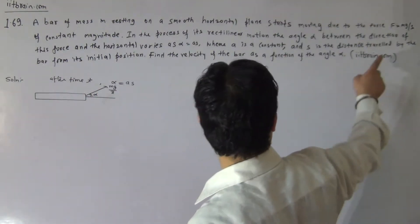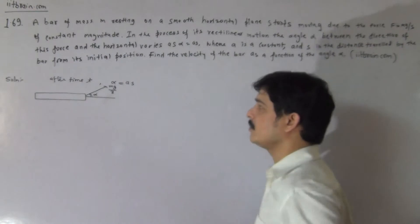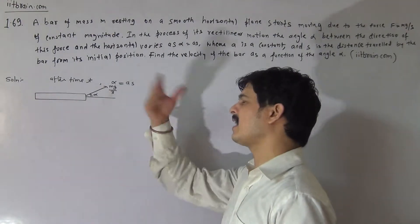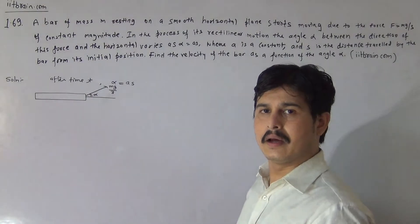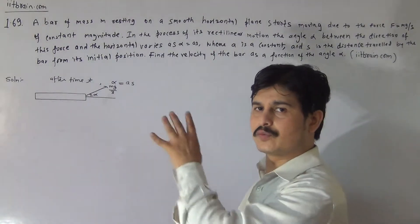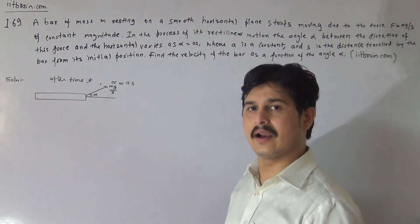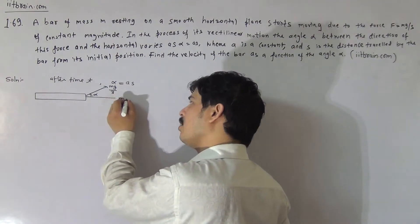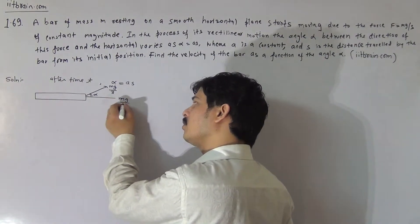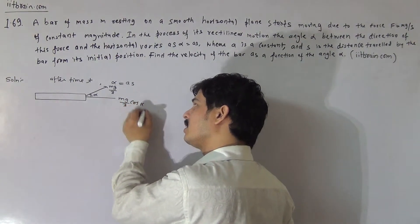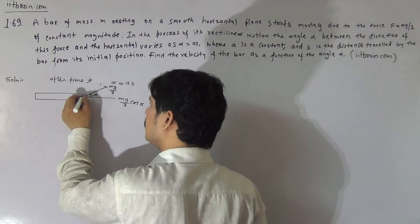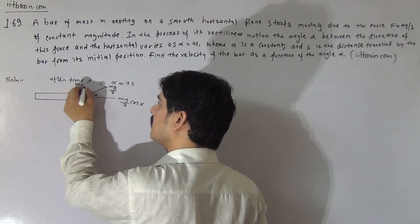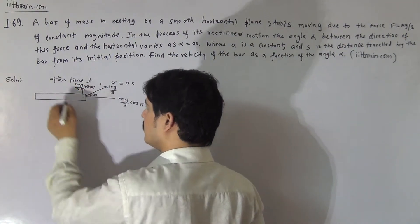The question is: is the force magnitude fixed at Mg by 3? So after time T, the angle made by this force with the horizontal is alpha. Then the component of this force along and perpendicular to the plane will be Mg by 3 cos alpha and Mg by 3 sin alpha respectively.